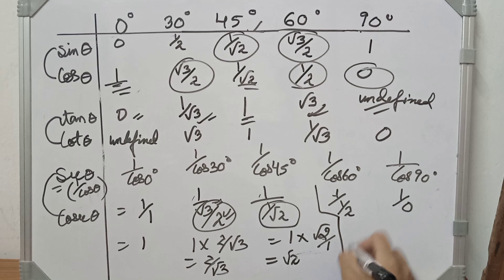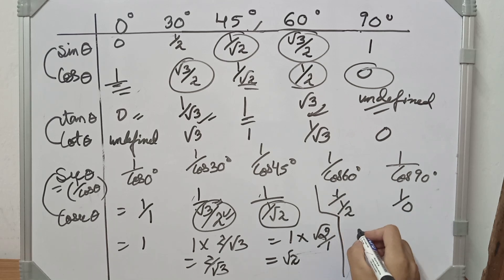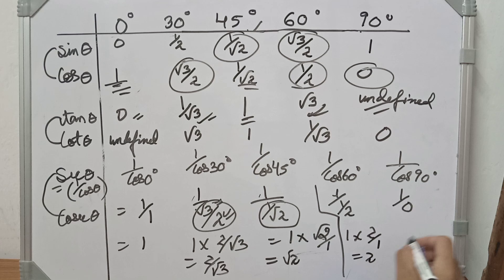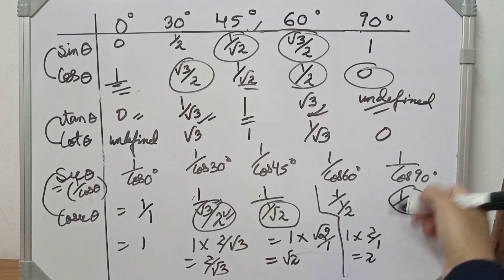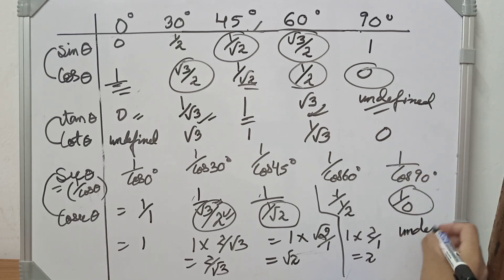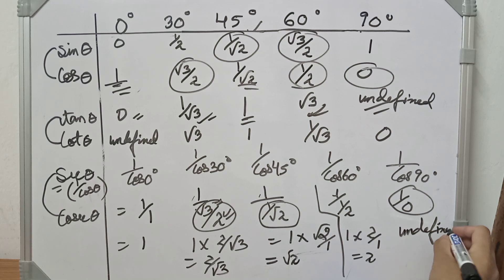And the root is 1 into 2 by 1, which equals 2. And the root is 0. Divide the number — it is undefined. Not defined.